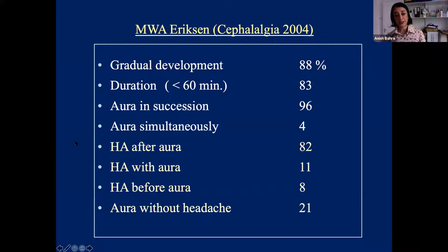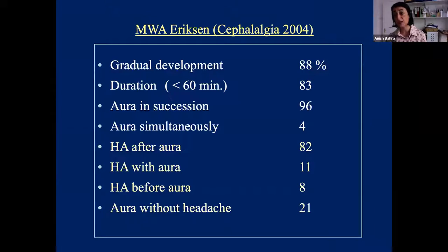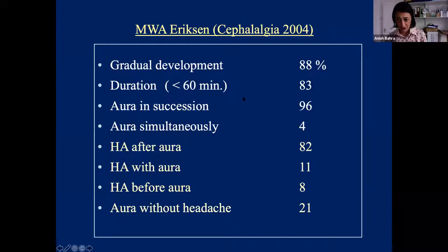Going back to gradual evolution: pretty much 90% of auras develop gradually. This is why it's always down to the story, because the scan is always normal. These are abnormalities of brain function, not brain structure. The majority last less than 60 minutes. If it's longer than that, you have to consider a secondary cause. In succession if you have more than one aura, that occurs in 90%. Simultaneous onset is very uncommon. You can get headache after aura, with aura, before aura, or without headache.